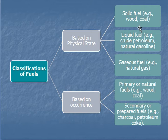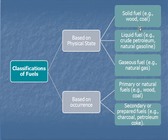The other classification is based on occurrence — whether we are using the fuel in the same form as we obtain it in nature, or whether it has been transformed. Fuels used in the same form as obtained from nature are called primary or natural fuels. For example, wood and coal are used directly as mined or harvested, with no transformation between extraction and end use.